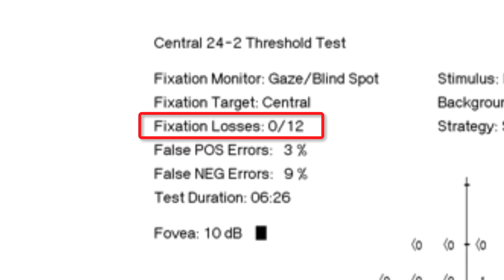Fixation losses should not exceed 20%. Now look at false positive errors. These responses measure how often the patient signaled awareness of the stimulus when it was not shown. In other words, the patient jumped the gun or was trigger happy. False positive errors should not exceed 30%.